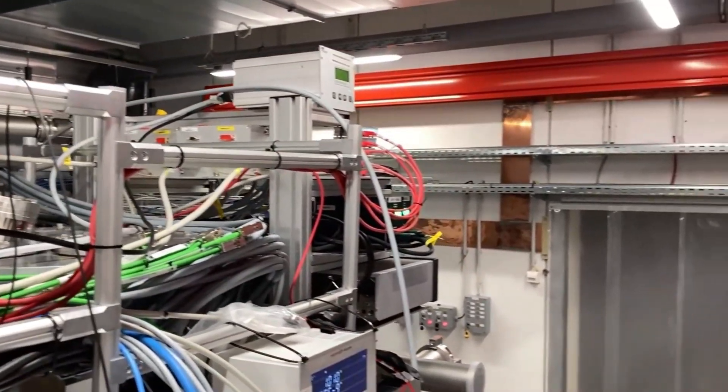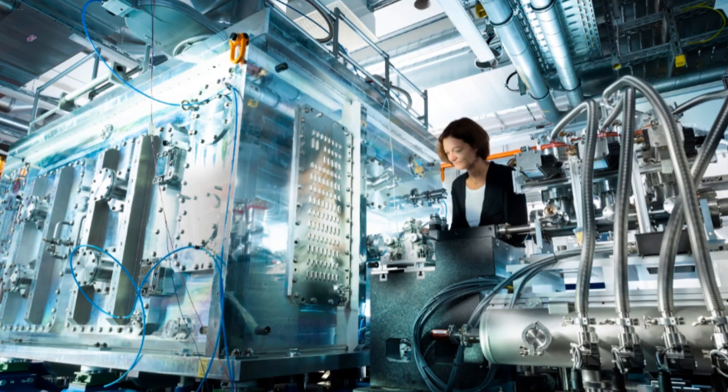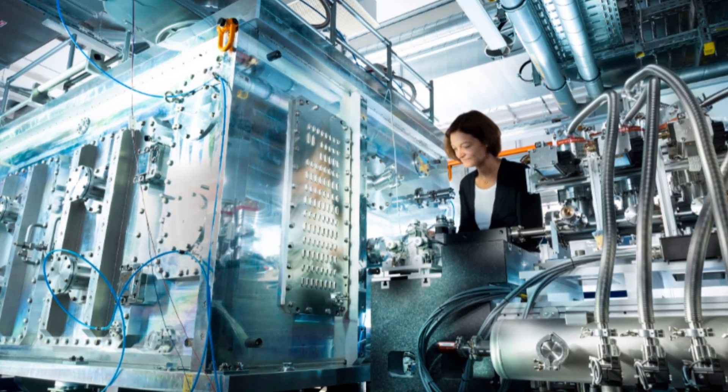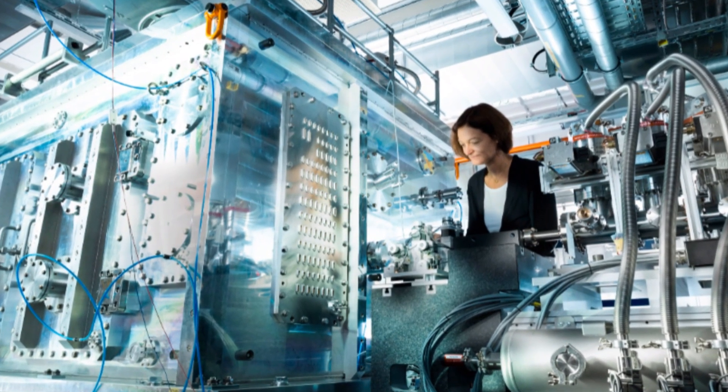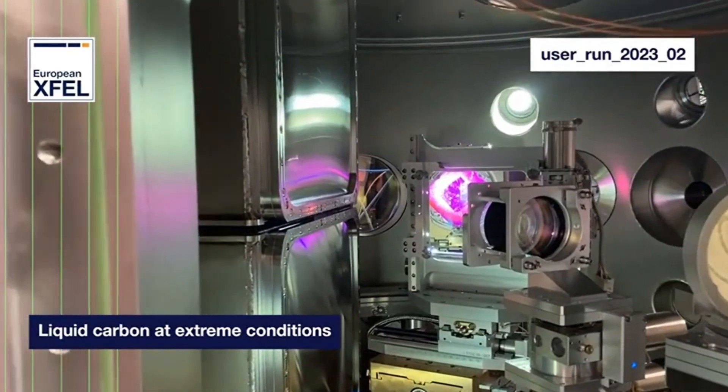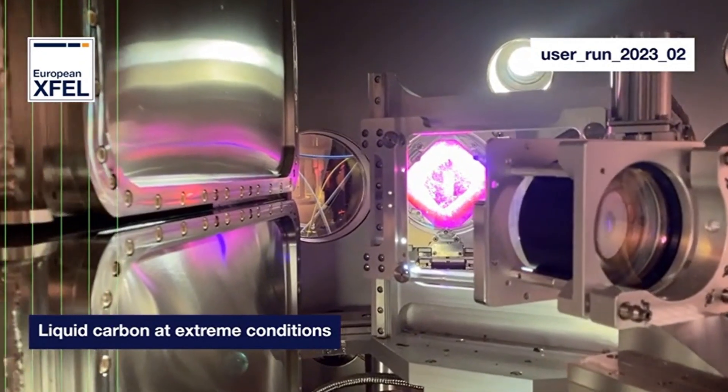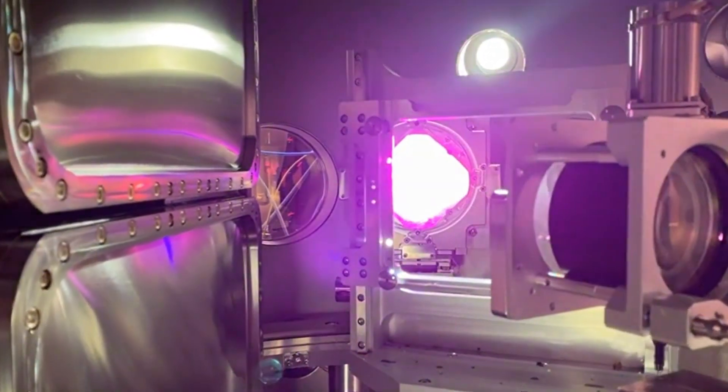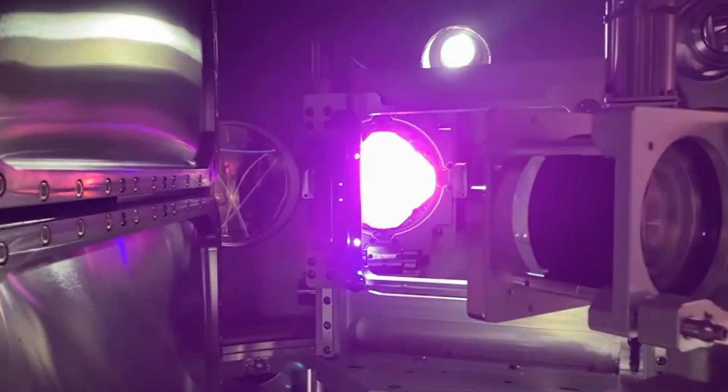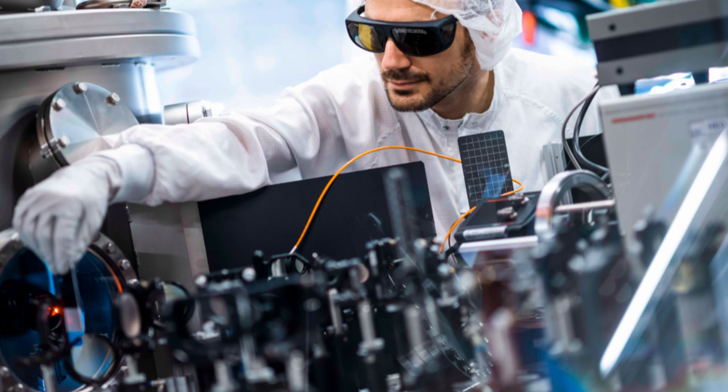Once the laser fires, the experiment plays out like a high-speed movie. Each fraction of a second liquefaction event is followed by a femtosecond X-ray snapshot. Then it restarts with slightly different timings, pressures, or temperatures. Stitching together these tiny snapshots, the scientists build a frame-by-frame picture, a movie, of how carbon transitions from its solid order into that liquid chaos and back again.